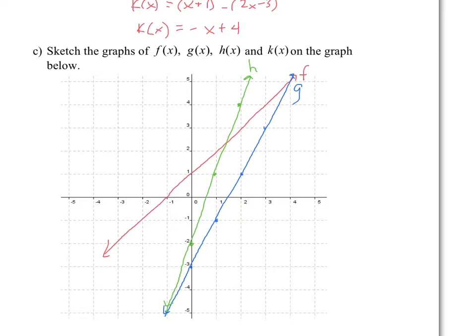And k will be the subtraction of the y value of f, subtracting the y value of g. So negative x plus 4 — the slope is negative 1, and your graph will do something like this. This is your k value, which is just a subtraction of the two.